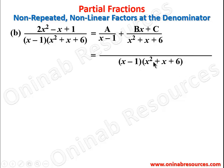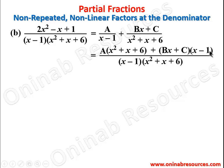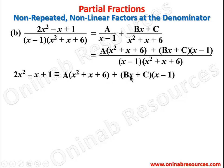Using the LCM, we multiply out: dividing by (x − 1) leaves (x² + x + 6) multiplied by A, giving A(x² + x + 6); dividing by (x² + x + 6) leaves (x − 1) multiplied by (Bx + C), giving (Bx + C)(x − 1). So: 2x² − x + 1 ≡ A(x² + x + 6) + (Bx + C)(x − 1).